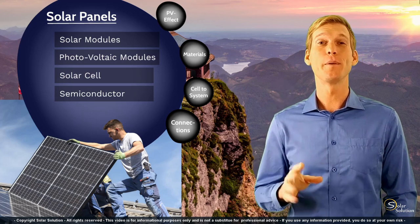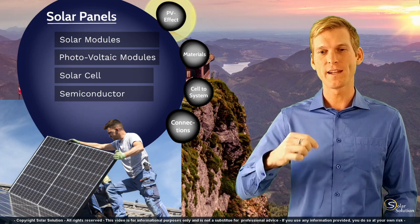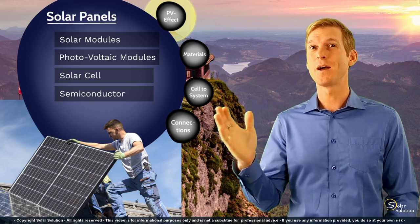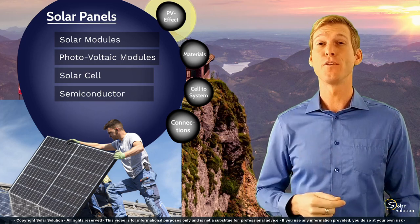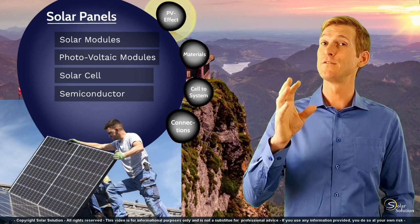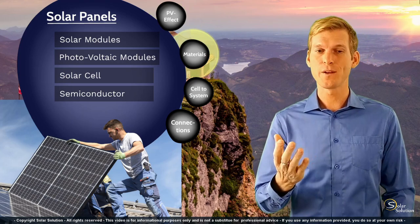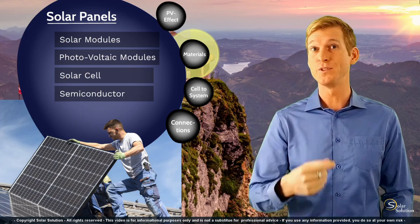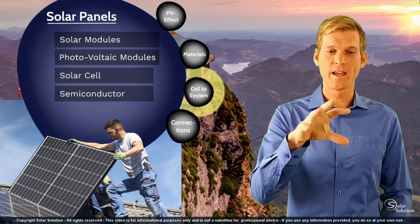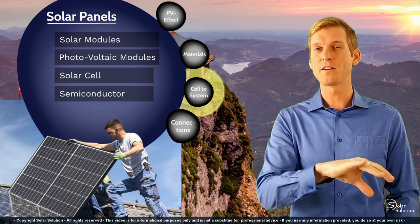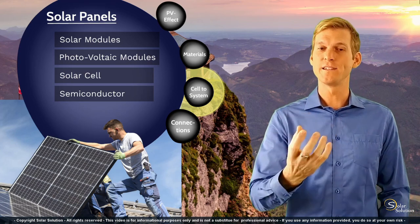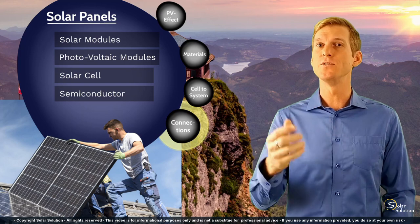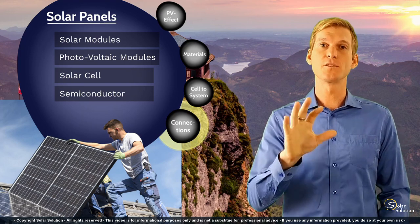I'll teach you the fundamentals of solar panels in four different steps. First, we'll look at the core operating principle — how solar panels turn sun power into electricity, which is referred to as the photovoltaic effect. Then we'll look at the different materials used to build a solar panel. After that, we'll look at how solar cells are combined to form a solar module, and finally how solar panels are wired and connected to each other.